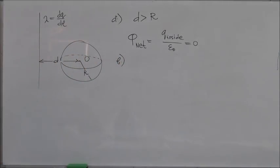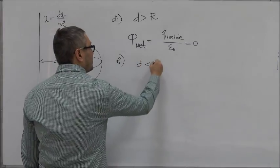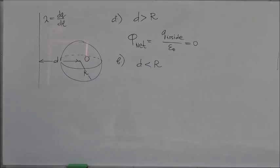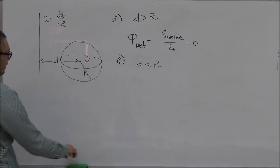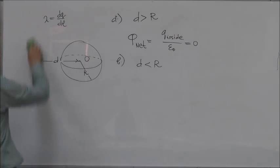So what happens if D now is less than R? If D is less than R, then there will be some portion of that line which is inside the sphere. To visualize this, let's redraw the picture.